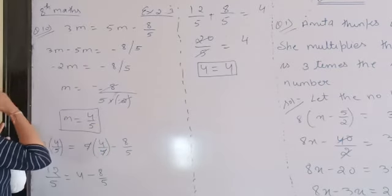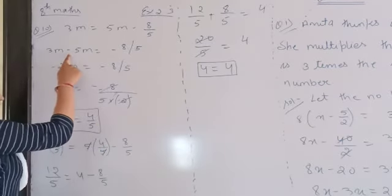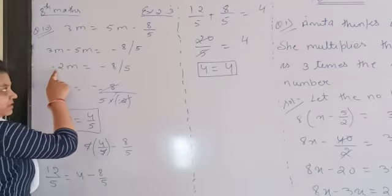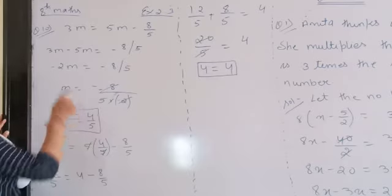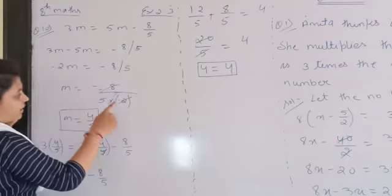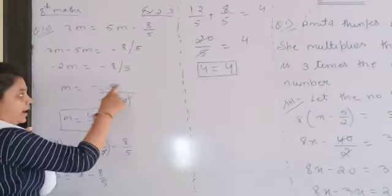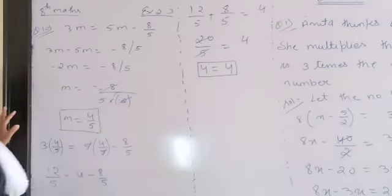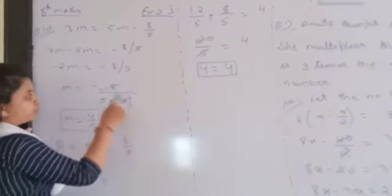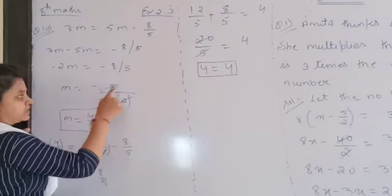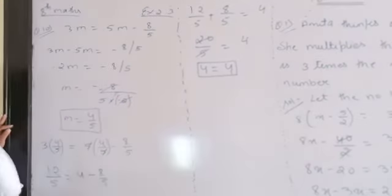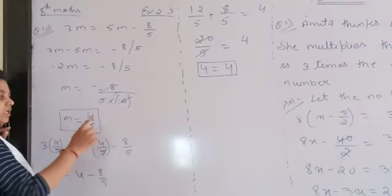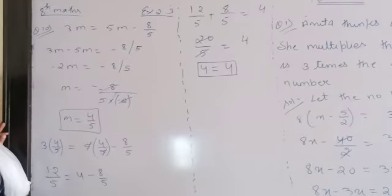The answer is minus 8 by 5 is equal to 10. Now we have to check the LHS and RHS.